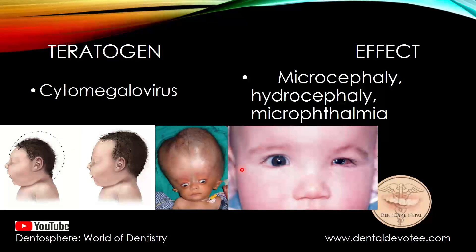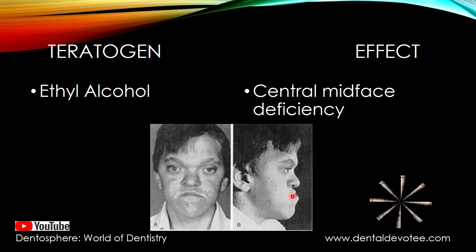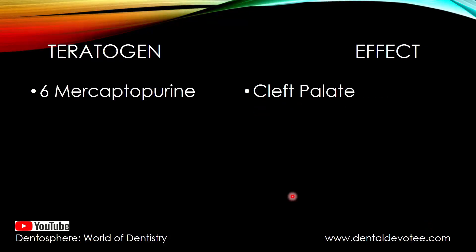Another teratogen is ethyl alcohol. It causes central mid-face deficiency or maxillary deficiency — the maxilla is less developed. From the lateral aspect, the facial profile is flattened to concave; it may be flattened or, if more severe, it may be concave. This mid-face deficiency is due to ethyl alcohol.